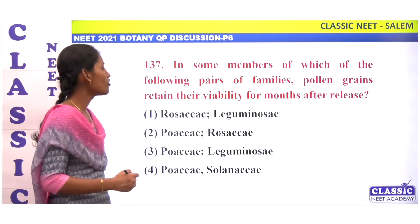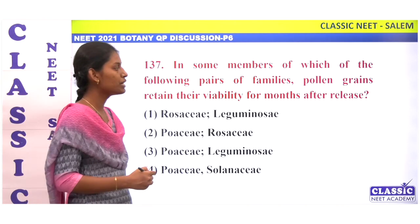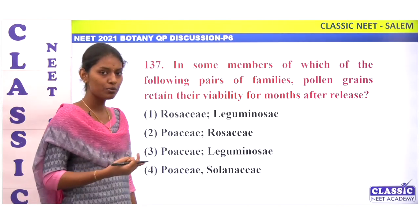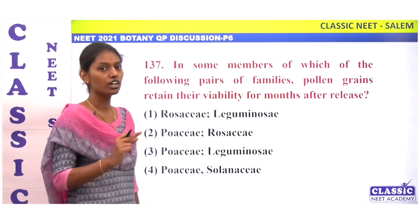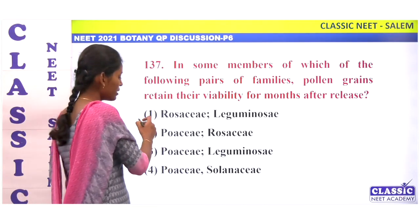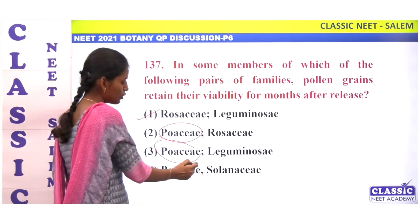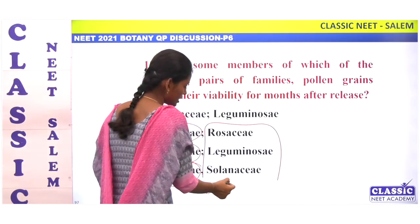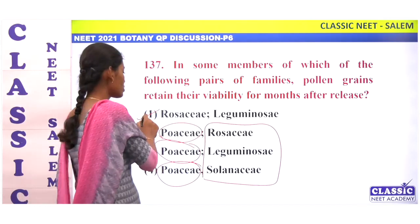In some members of which of the following pairs of families do pollen grains have a viability period for months after release? Rosaceae and Leguminosae is correct — pollen viability lasts for months. Poaceae, Leguminosae, and Solanaceae options are checked. The correct pair is Rosaceae and Leguminosae. Option 1.